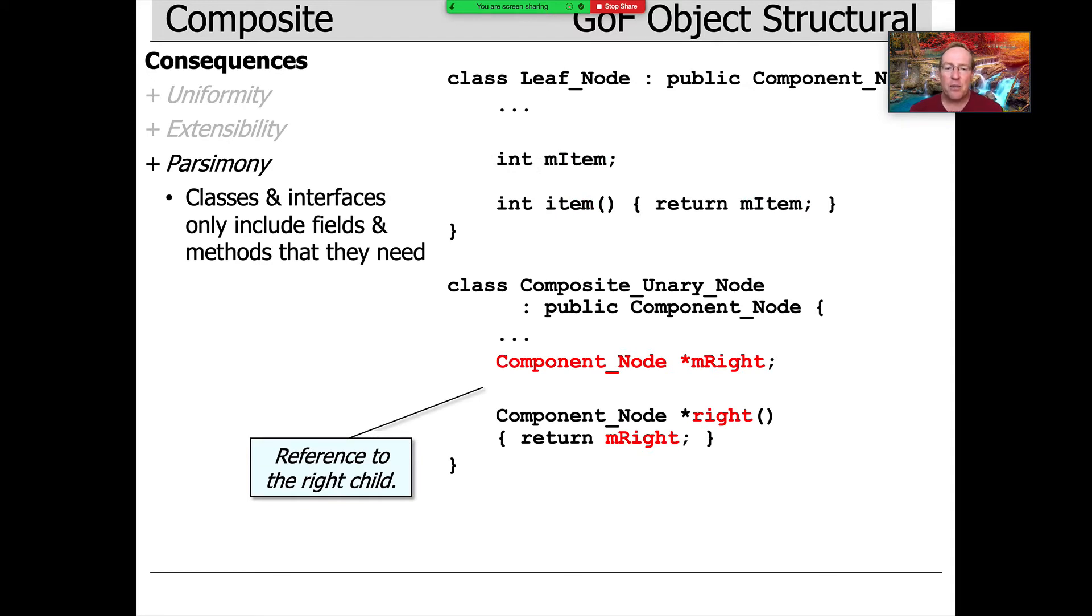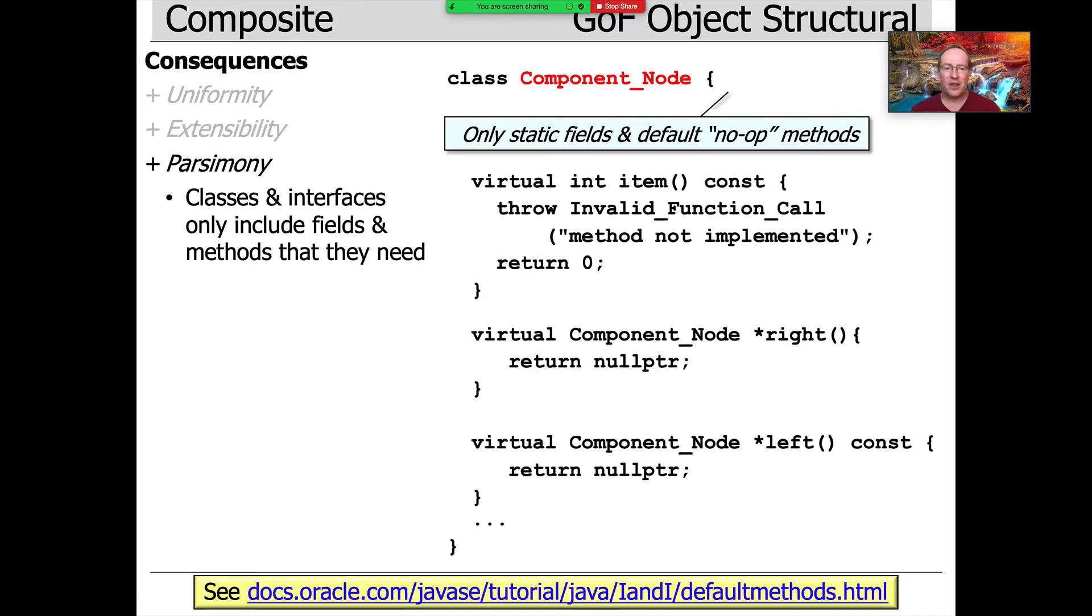Likewise, down here you can see the composite unary node, which inherits from component node, is going to maintain a reference to its right child, and its right method will return the right child. But were you to call the left method on a composite unary node, you'd get a null pointer, which is what it inherits from the component node abstract base class.